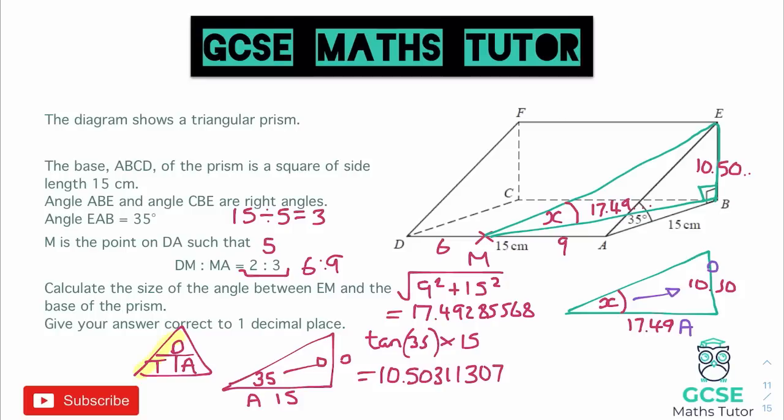So we're going to be using our tan triangle again, just down here. This time we're finding an angle. So when I'm finding an angle, I'm going to press shift tan first. I'm going to do the inverse of tan. So I do the inverse of tan, and I'm going to put the opposite over the adjacent.